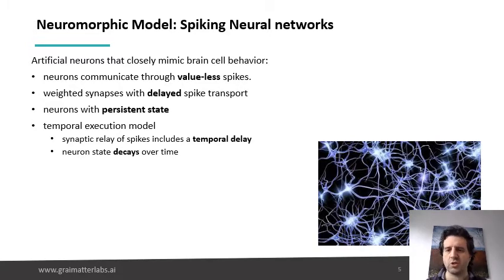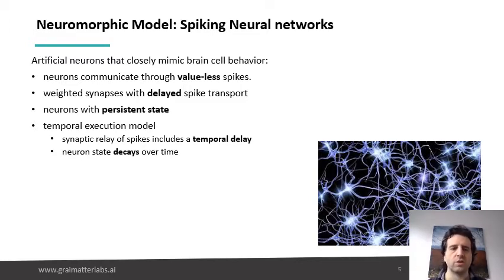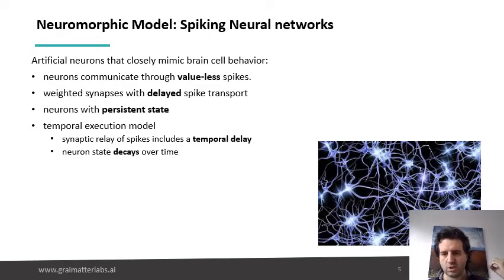For most of the models — of course you have recursive models, recurrent models that actually don't have that — but most of the models that are used actually assume that neurons are stateless and that you have a feed-forward network. In spiking neural networks, each neuron is stateful. It acts on its inputs, it spikes, and then it continues to hold state and continue to receive at the same time.